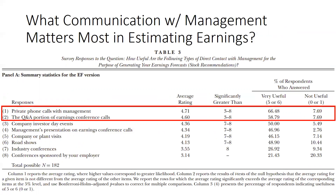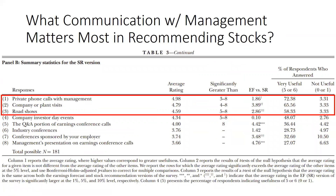They drill down further: what communication with management matters most for estimating earnings? Number one is private phone calls with management. Number two is the Q&A portion of earnings conference calls. The authors note in the written text that many of the sell-side analysts they interviewed confirmed they do have access to CEOs and CFOs and make private phone calls to them — and that's a significant driver of their earnings estimates. A similar question — what communication with management matters most for recommending stocks? Again, number one is private phone calls with management. Number two and three are company or plant visits — kicking the tires — and roadshows, with a breakpoint after that.